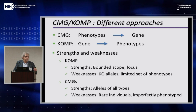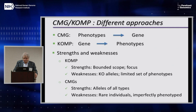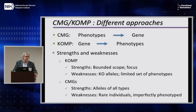Each of these approaches has strengths and weaknesses. In COMP, the strengths are that it's a bounded scope — you know roughly how many genes there are, and you're well on your way to making a knockout for every one. So you have real focus in the program. The weaknesses are that for the most part you're dealing with knockout alleles, and because of the pipeline and production approach to phenotyping, you have to balance all possible phenotypes you could measure against those you can put into your pipeline efficiently.